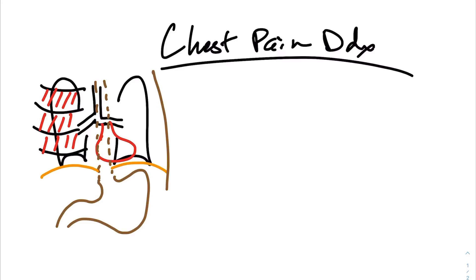So if you look at my fantabulous drawing here, this right here are your lungs — these are the things that are in your chest cavity, in your thoracic cavity. So your lungs here, your heart here, your esophagus, your stomach, and also this right here is supposed to be your ribs and the muscles in between them.